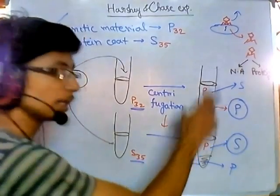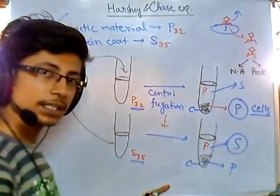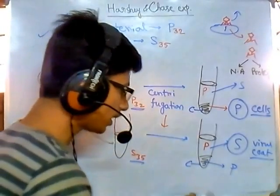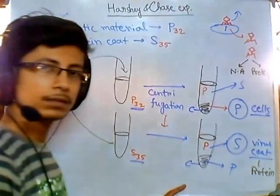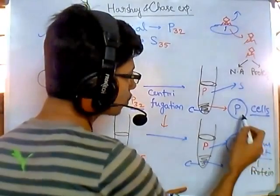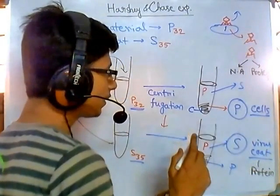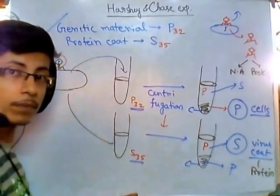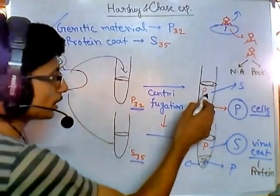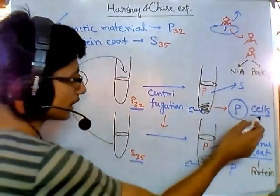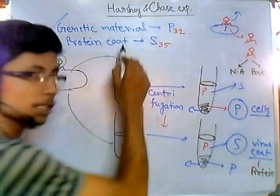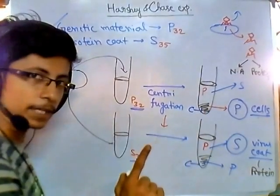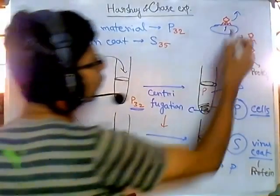The pellet obviously contained bacterial cells, and the supernatant obviously contained the virus protein coat, which has no nucleic acid. So where did the nucleic acid go? It went into the bacterial cells — the DNA was injected inside during infection. According to expectations, it should have remained in the supernatant inside the viral coat, but the radioactivity was coming from the pellet, meaning the genetic material moved inside the cells.